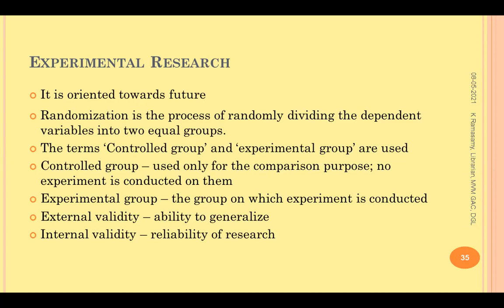In experimental studies, the controlled group is one on which no experiment is conducted — they simply come and go. All experiments are conducted on students who are part of the experimental group. For example, to find out the effect of Kabbasura Kudineer herbal water on minimizing the possibility of getting COVID-19, one group receives no herbal water (controlled group), while the other group receives Kabbasura Kudineer (experimental group) and we check whether it helps them combat COVID-19.